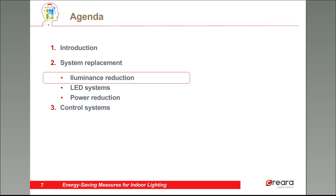Following this introduction, we're going to study the first option: the power reduction. We achieve this by replacing the lighting system — the whole system or just an element. First, we're going to analyze the illuminance reduction.